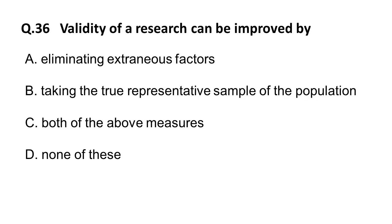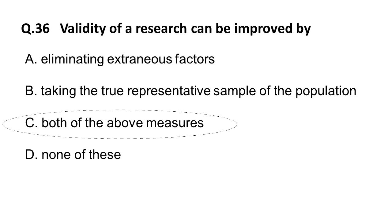Next question: validity of research can be improved by — option A is eliminating extraneous factors, option B is taking a true representative sample of the population. Both these statements are correct. The correct answer is both A and B — validity of research can be improved by eliminating extraneous factors and taking a true representative sample.